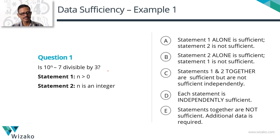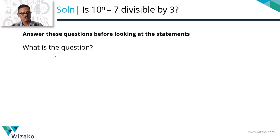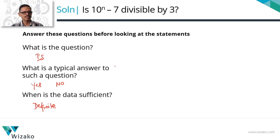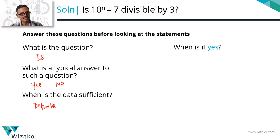Question 1: Is 10^n − 7 divisible by 3? Statement 1: n > 0. Statement 2: n is an integer. This is a yes/no question. Following the template: when is the data sufficient? If you can definitively say yes, 10^n − 7 is divisible by 3, or definitively say no, it is not divisible by 3, the data is sufficient. The data is not sufficient if you find one case where it is divisible and another where it is not. When is the answer yes? When it is divisible by 3. When is the answer no? When it is not divisible by 3.